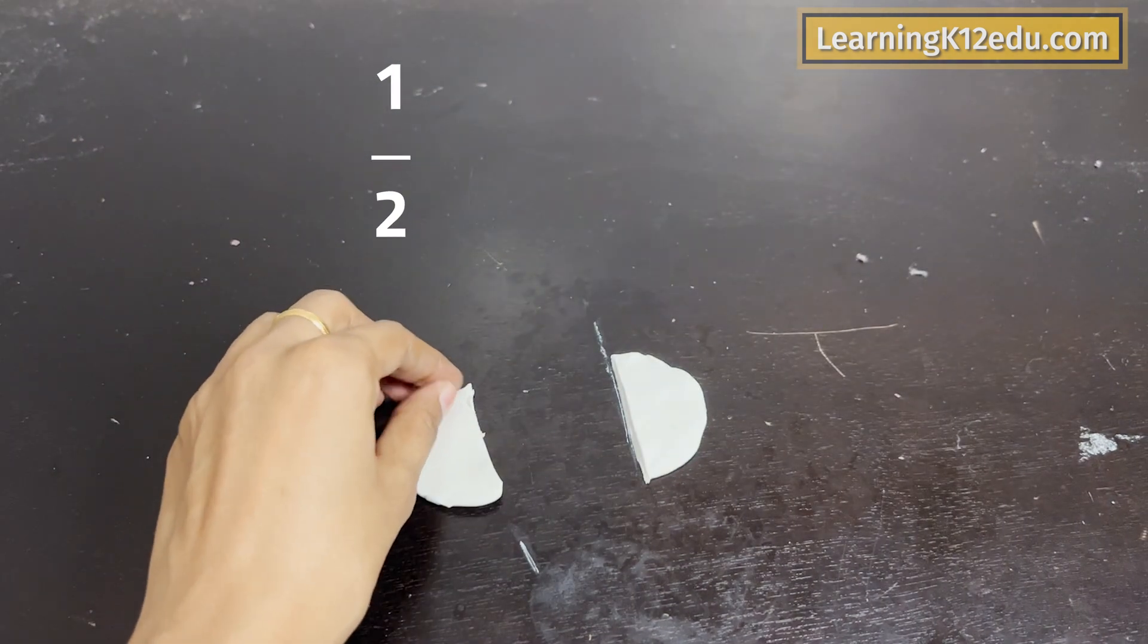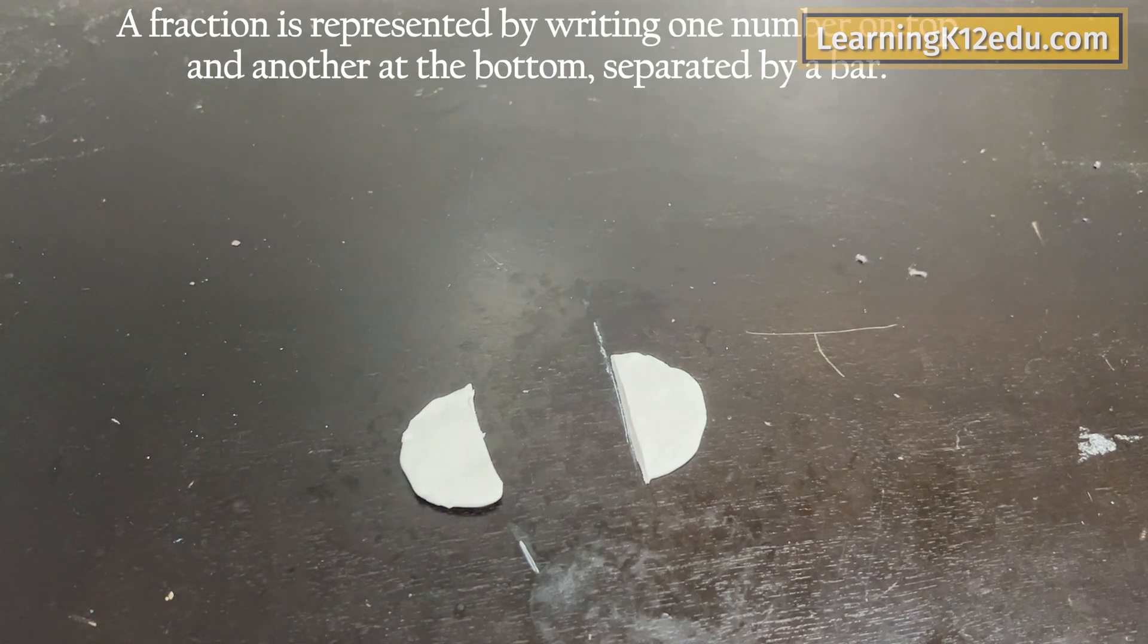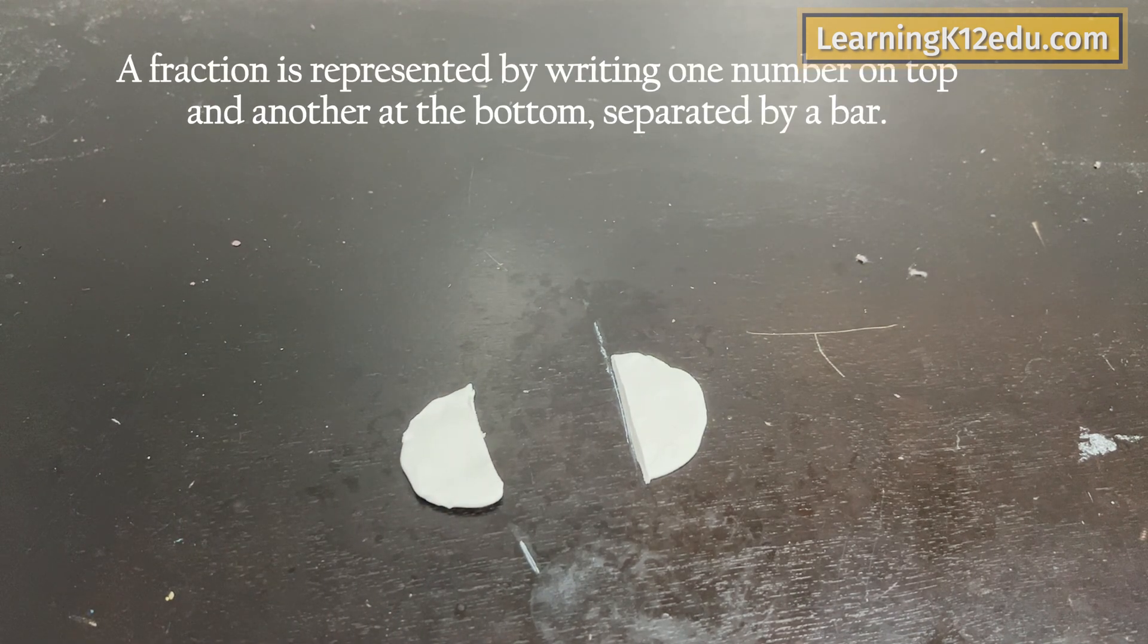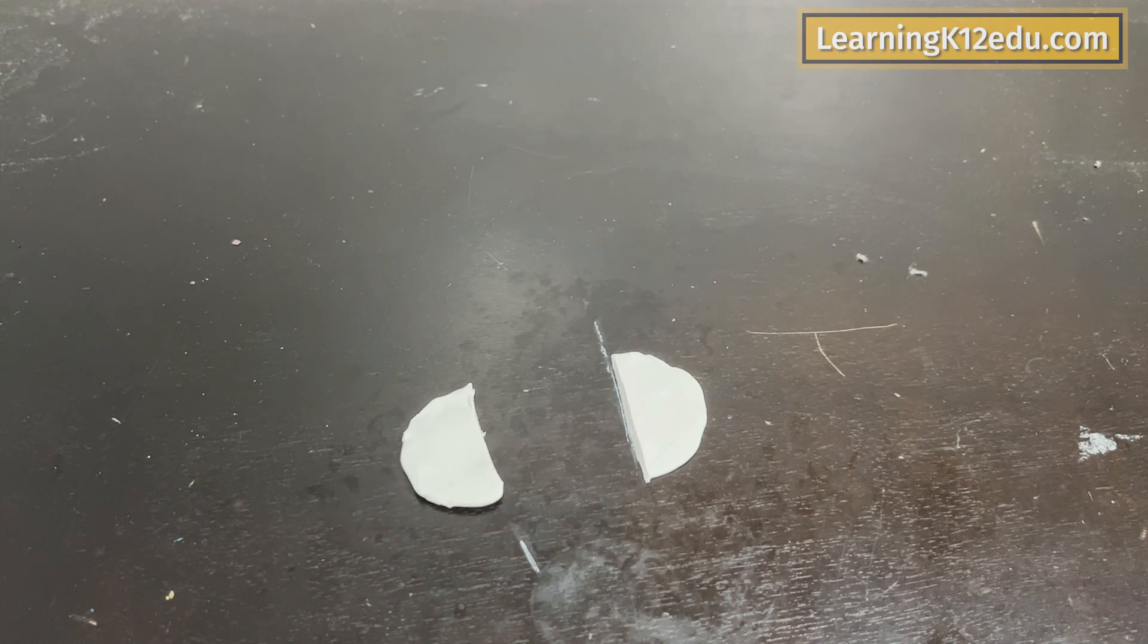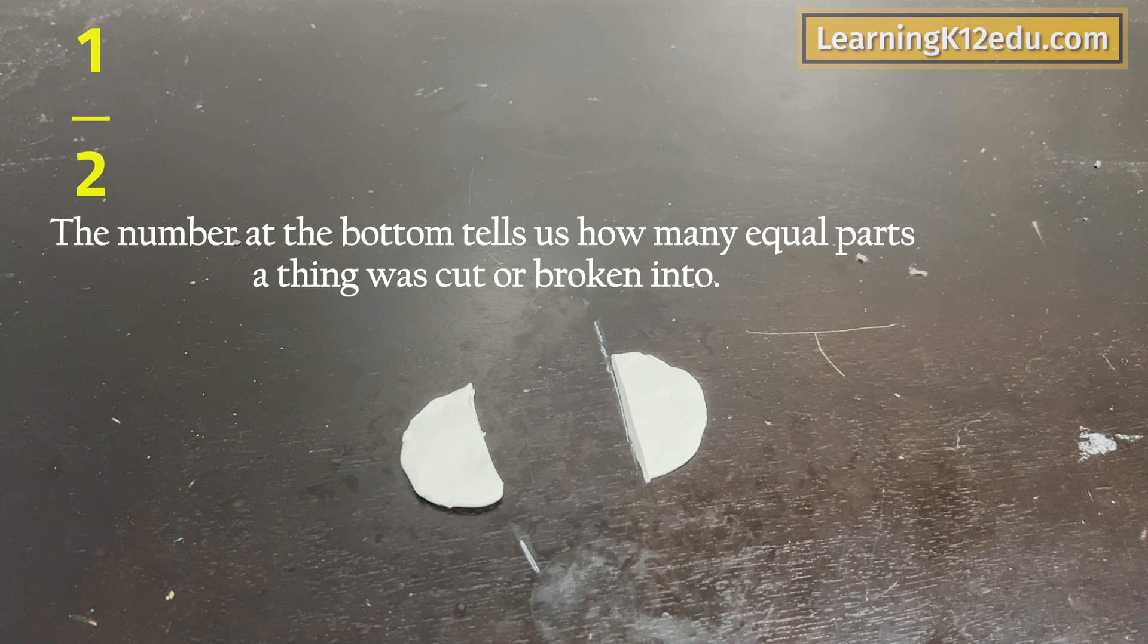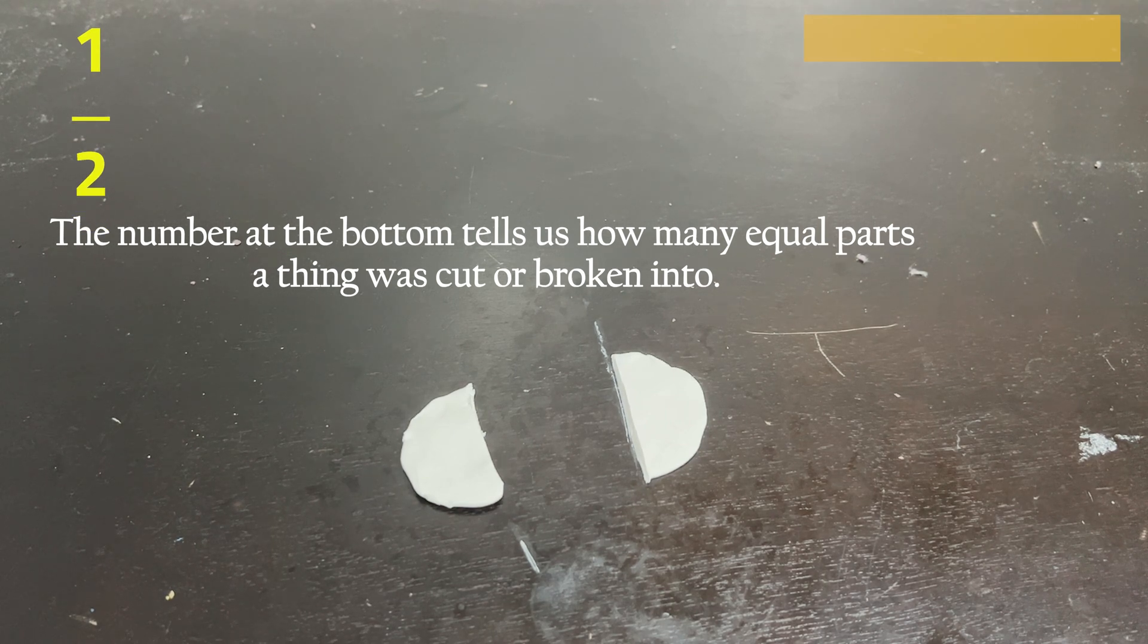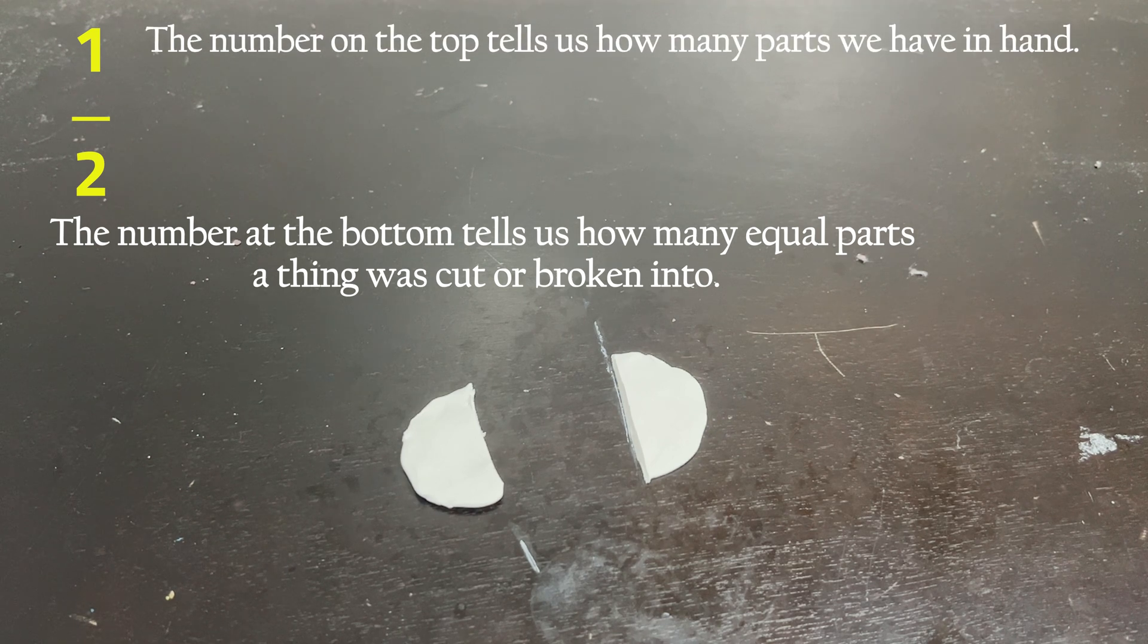So now we can see that a fraction is represented by writing one number on the top and another at the bottom. The number at the bottom tells us how many equal parts a thing was cut or broken into. And the number on the top tells us how many parts we have in hand.